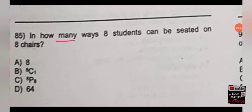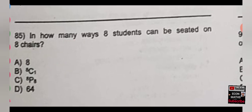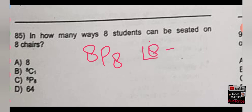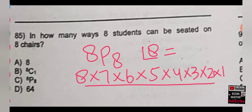The next question: in how many ways can 8 students be seated on 8 chairs? The correct option is 8P8, which equals 8! = 8 × 7 × 6 × 5 × 4 × 3 × 2 × 1. That is the total number of arrangements. The correct option is C, which is 8P8.